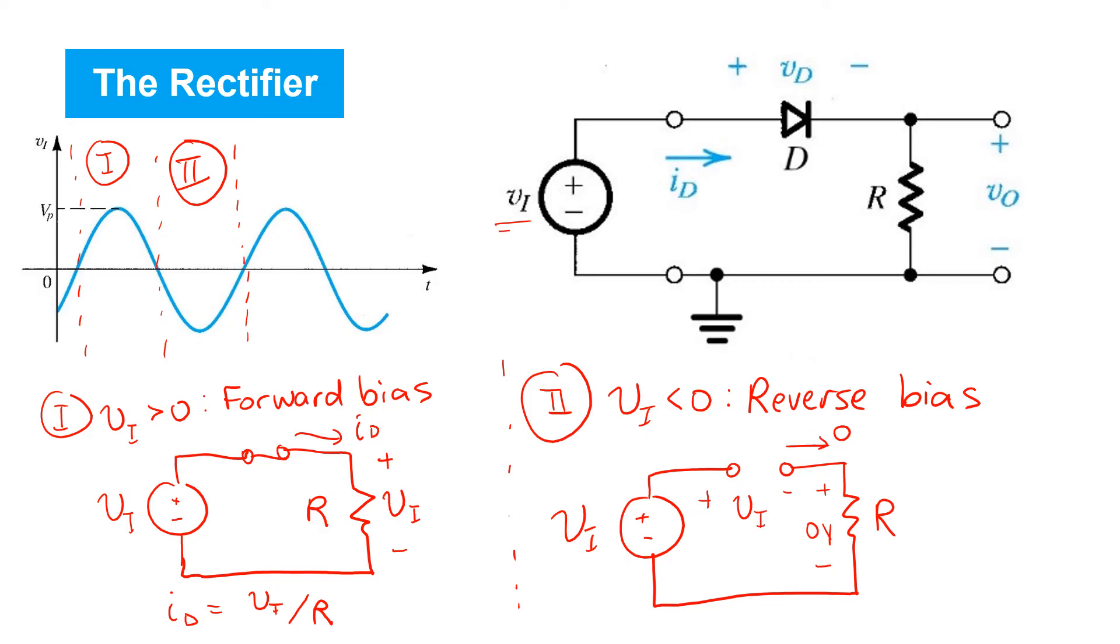So the entire voltage drop appears across the diode. Remembering that vi is less than zero in this case, we clearly see that that's a reverse voltage on the diode, which confirms our assumption that the diode is under reverse bias.